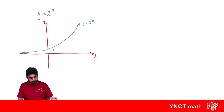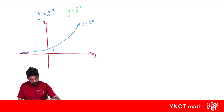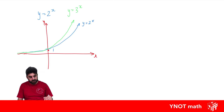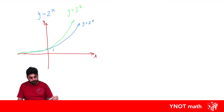If you had y equals 3 to the x, it looks very similar — it also goes through 1, but it gets steeper quicker. The y-intercept is 1 because 3 to the power of zero is 1. Even if it were a million to the power of x, it would still go through 1 — it would just get really steep really quickly.